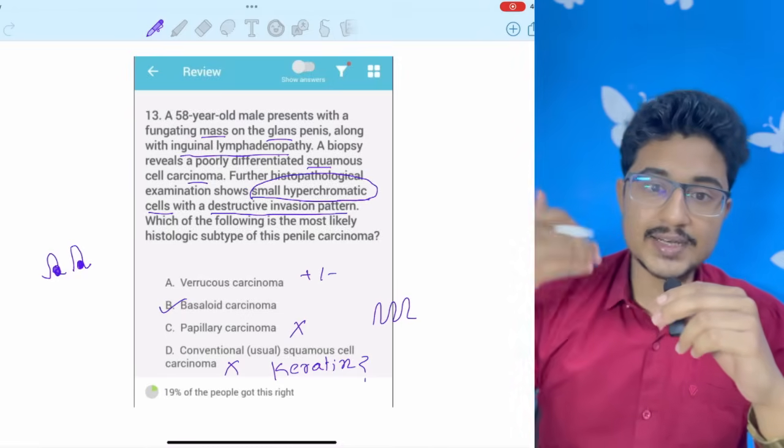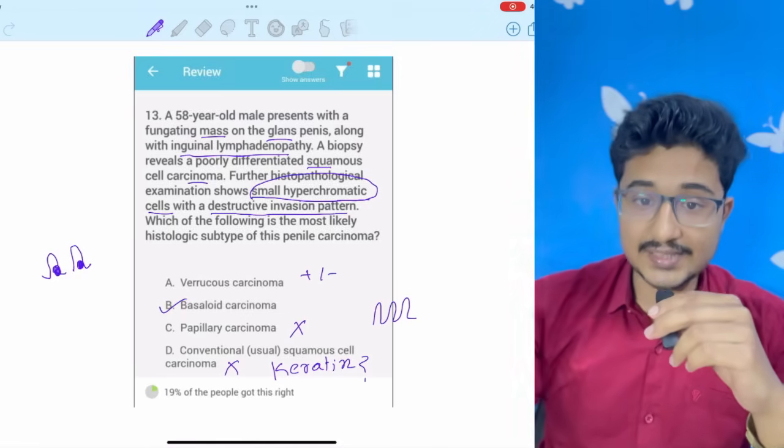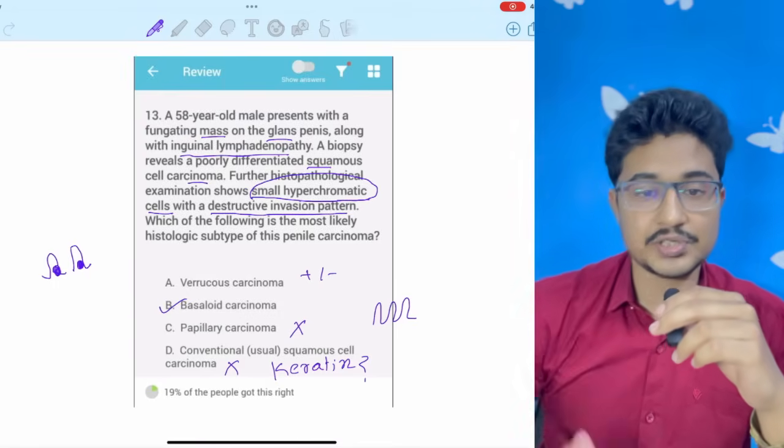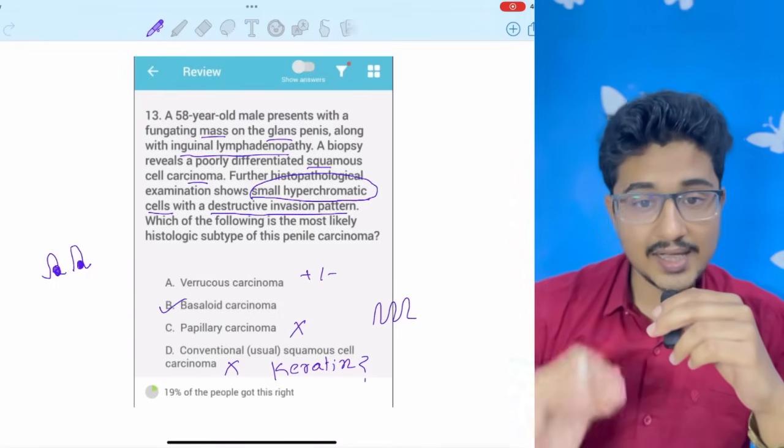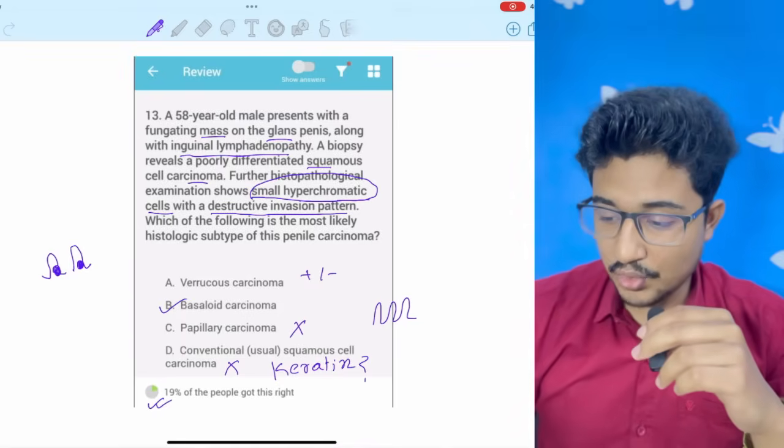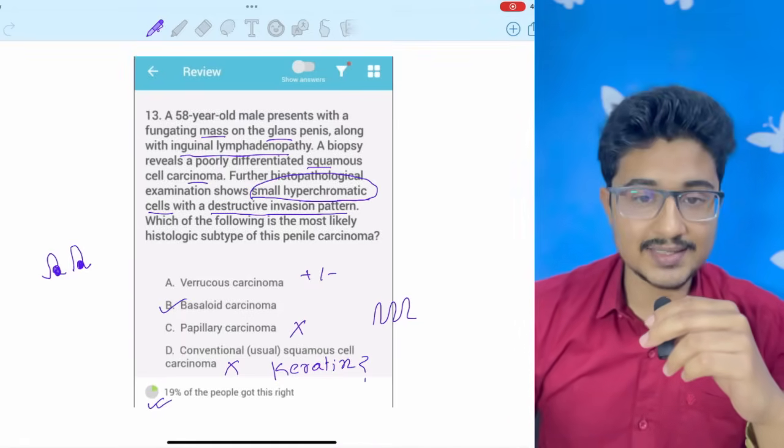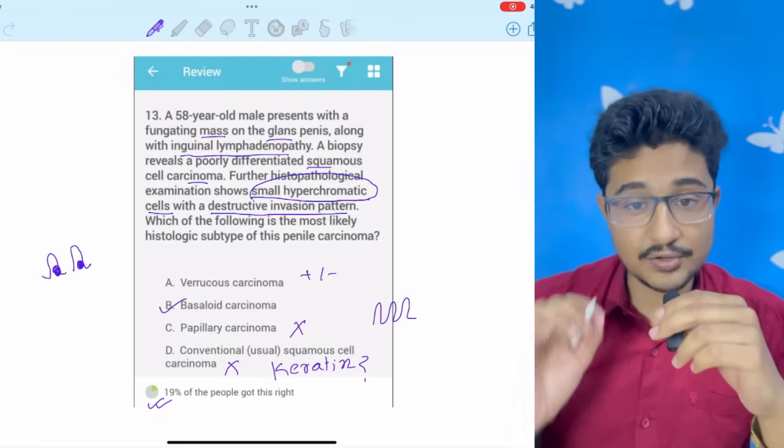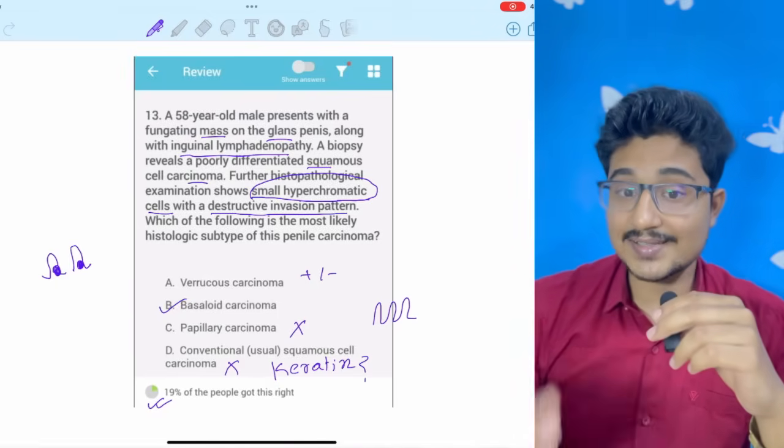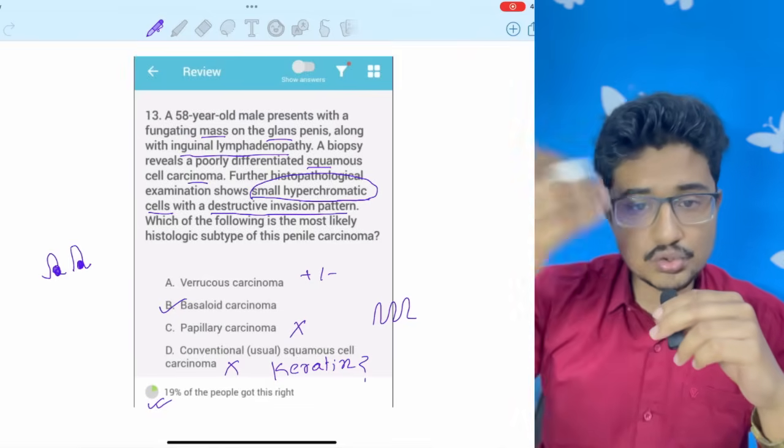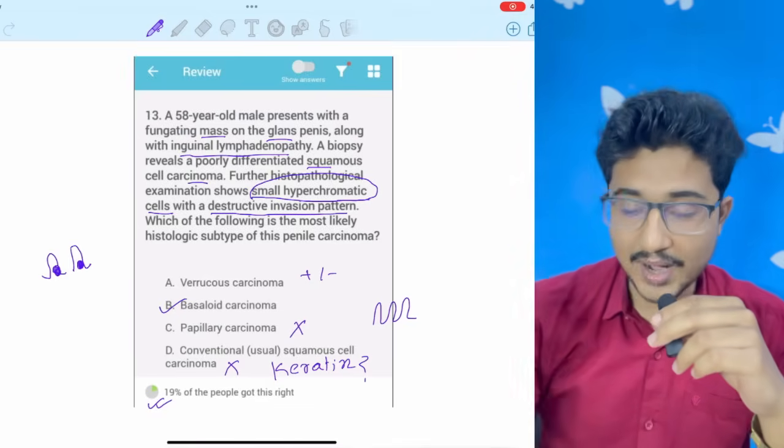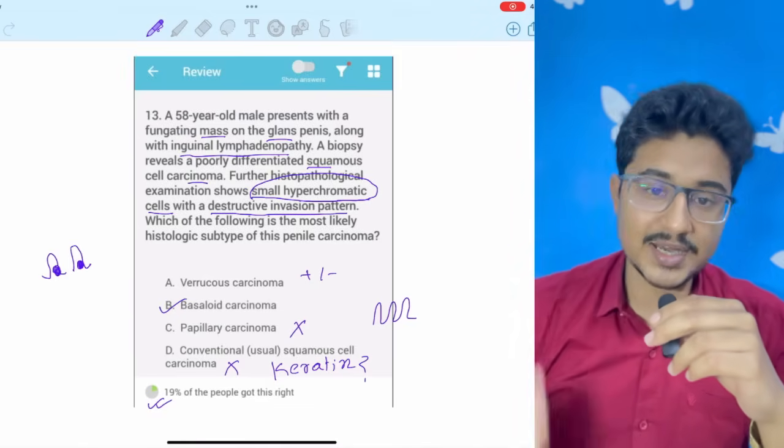Like this, you have to correlate your knowledge of other subjects with that of the question. So, I am going to correlate this like this and I got the correct answer. Only 19% marked it correctly. So, I hope you understand how to use knowledge from other subjects, which has no relation to your MCQ, which will come to your screen.